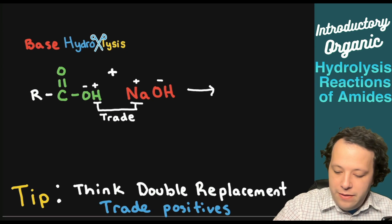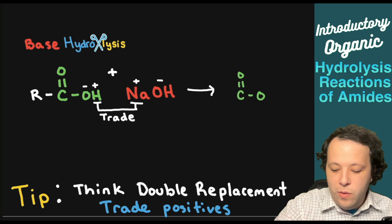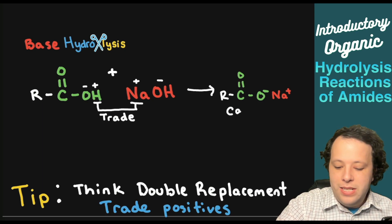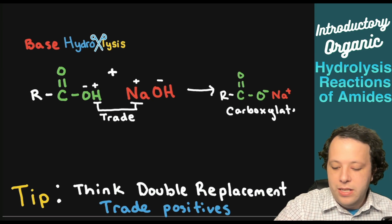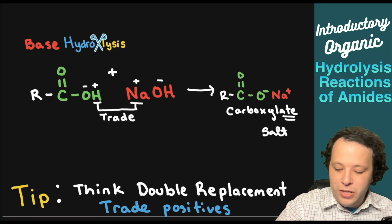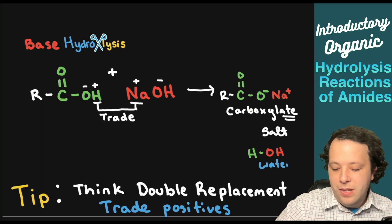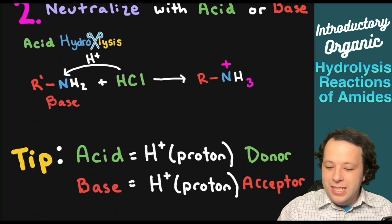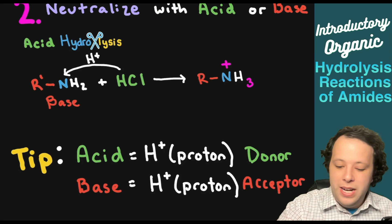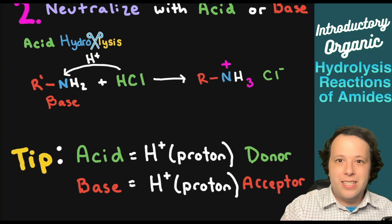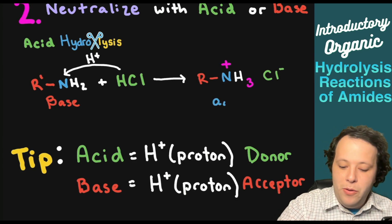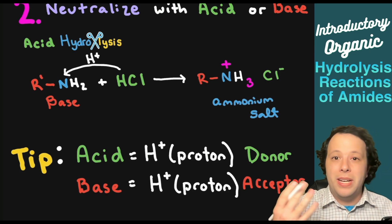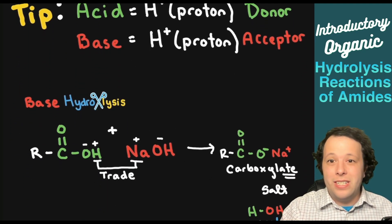When this happens, the carboxylic acid is going to become a salt. We'll have our C double bond O with an O minus and Na plus — this is known as a carboxylate salt, with that -ate ending. The other portion is water, H bound to OH. So if we do acid hydrolysis we make an ammonium salt — that's NH3 plus with Cl minus. If we do base hydrolysis we make a carboxylate salt.